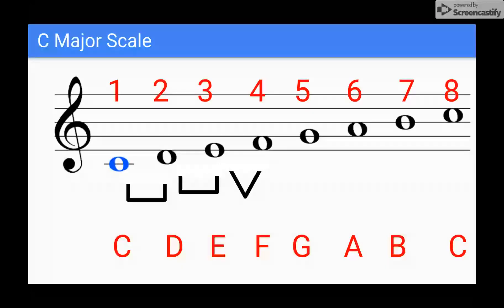E and F, we need a half step. And if you look at the keyboard, you will see that there is no black key in between E or F, which makes it a half step. So that's good. We're moving on.